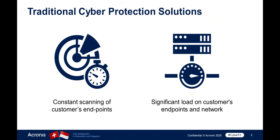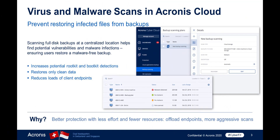Traditional cyber protection solutions imply that the scanning of customer endpoints for malware takes place all the time, which significantly increases the load on endpoints and the network. In contrast, Acronis CyberProtect Cloud allows you to perform a quick scan of critical areas of the customer's endpoint and scan a full image backup for malware. This allows you to drastically reduce the load on the endpoints and the network.